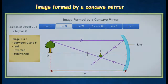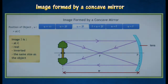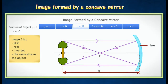When the object is placed further away from C, the image will appear between C and F. The image is real, inverted and diminished. When the object is placed at C, the image will appear at C as inverted, and the image is the same size as the object. This situation is usually used as a light reflector in a projector.